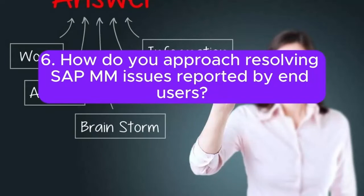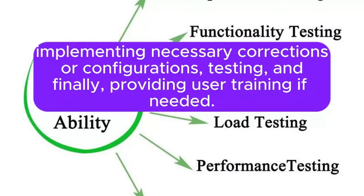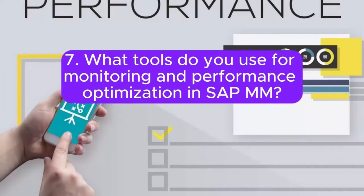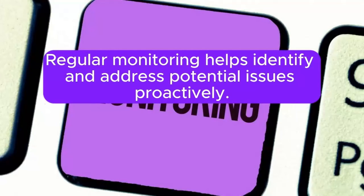Question 6: How do you approach resolving SAP MM issues reported by end-users? The resolution process involves analyzing the reported issue, identifying the root cause, implementing necessary corrections or configurations, testing, and finally providing user training if needed. Question 7: What tools do you use for monitoring and performance optimization in SAP MM? Tools like SAP Solution Manager, ST22 for dump analysis, and ST05 for performance analysis are utilized. Regular monitoring helps identify and address potential issues proactively.